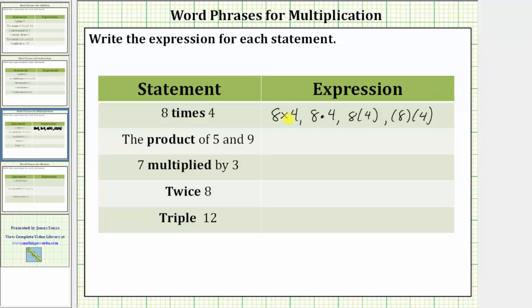In the first expression for eight times four, we have the multiplication sign that looks like a lowercase x. In the second expression, we have the dots represent multiplication. Next, we have eight next to four in parentheses. And then finally, we have eight and four in parentheses next to each other. All these expressions represent eight times four.